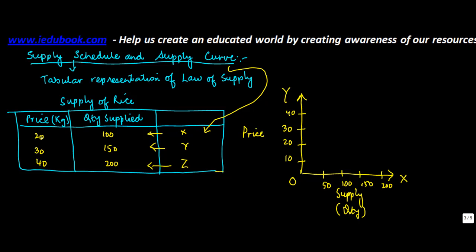When the price is 20, the quantity supplied is 100. Drawing a line to that point on the graph — where price is 20 and quantity supplied is 100 — this is represented by point X.